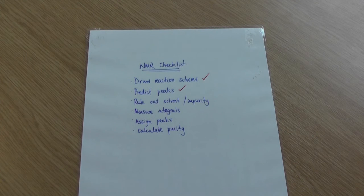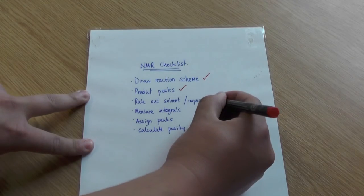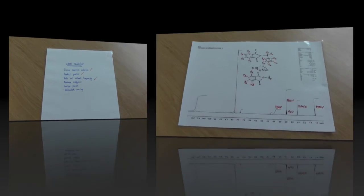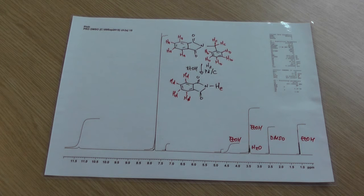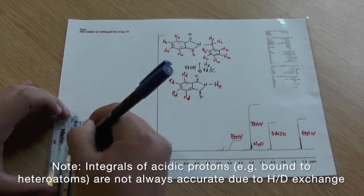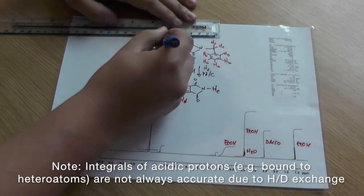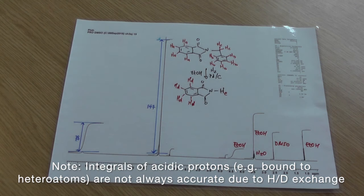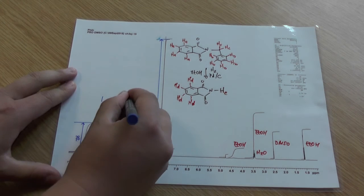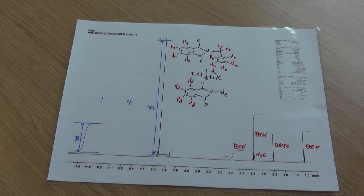Looking back at our checklist, we've ruled out our solvent and impurity peaks. Now it's time to measure our integrals. The easiest way to measure your integrals is to draw a straight line at the top and the bottom of your integrals and then measure the distance between the two in millimeters. Looking at the heights of the two peaks we can see that we've got a 1 to 4 ratio. So now we can assign the peak on the left to the hydrogen attached to the nitrogen of the ring and the large peak on the right corresponding to 4 protons to the aromatic protons of the product.